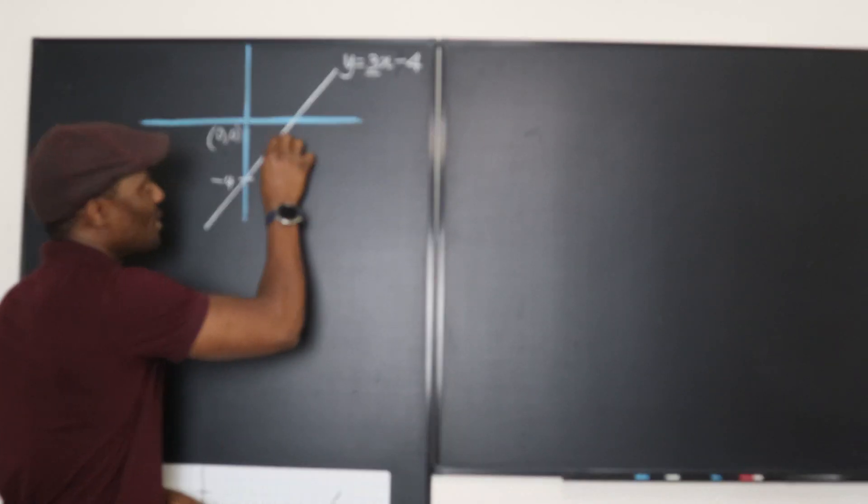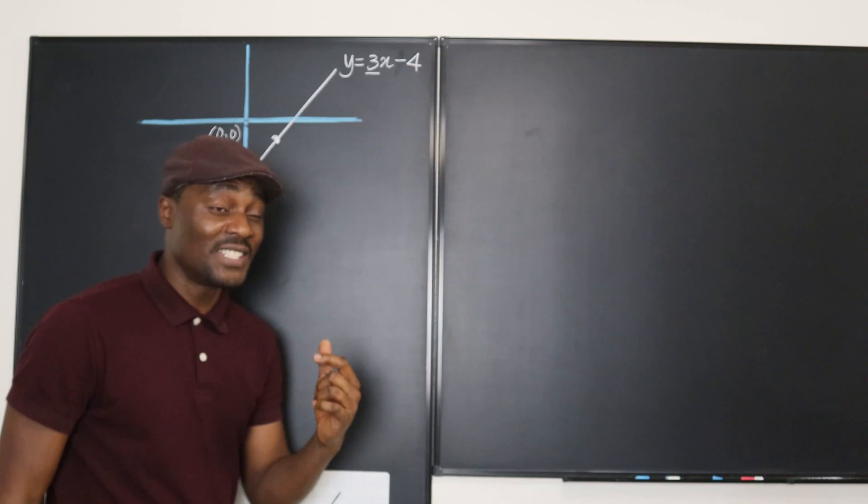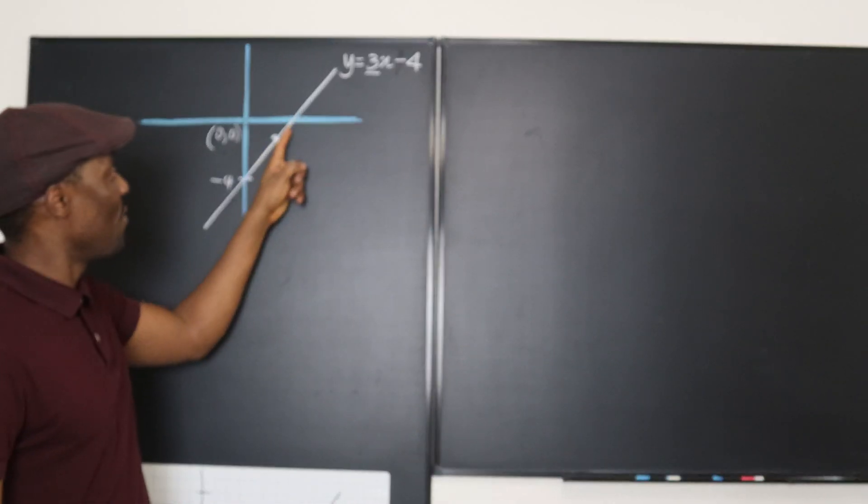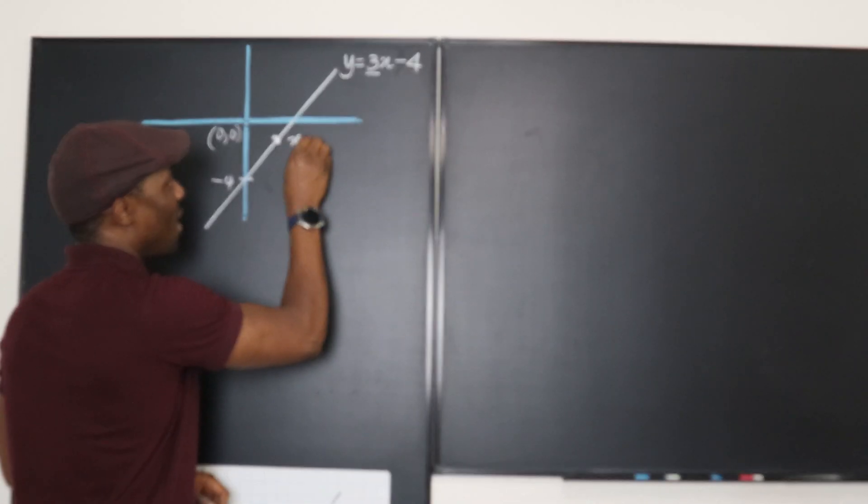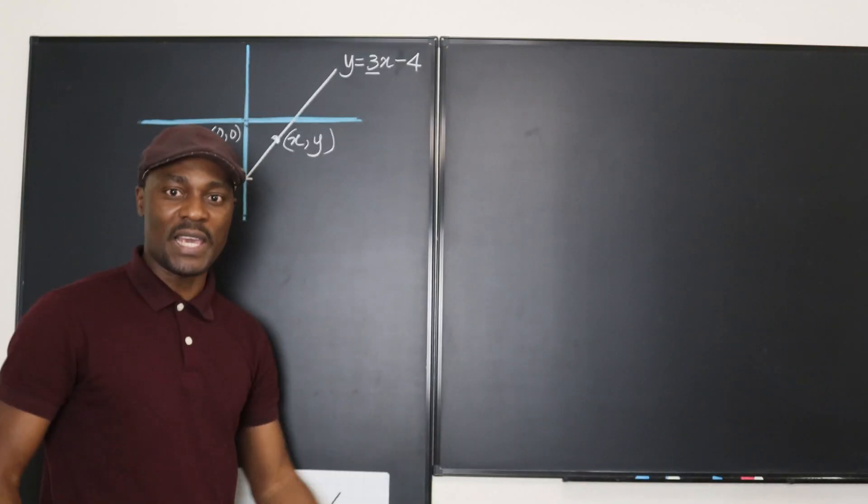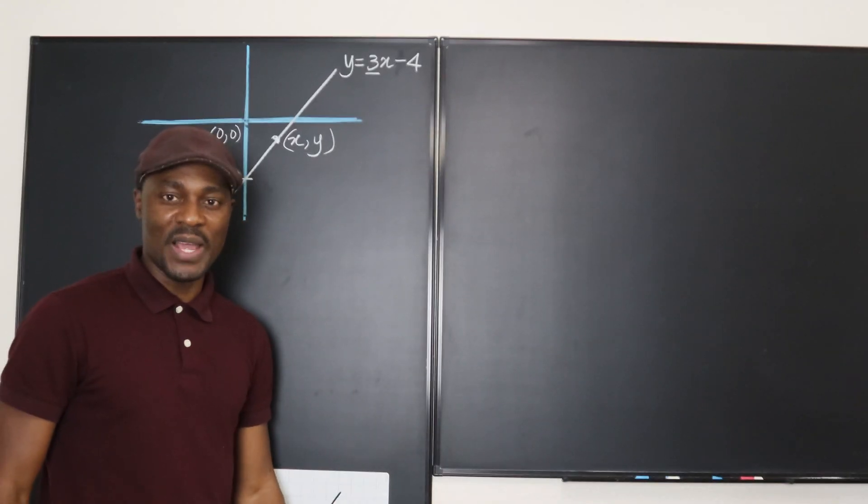But we really don't need all these things because all you have to do is just choose a point. And you're going to assume that that point is x, y. So I already chose this point because I'm very smart. I can see that the closest point to the origin has to be somewhere around here. So I'm just going to call the point x, y. So my job is to find out what exactly x, y is.